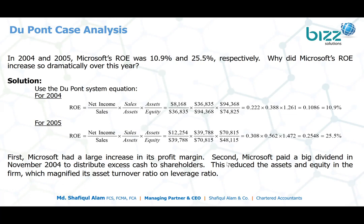Basically, Microsoft had a large increase in its profit margin. Additionally, Microsoft paid a very large dividend. The shareholders' equity consists of share capital, retained earnings, and other reserves. Because Microsoft paid a large dividend during 2004 and 2005, the cumulative retained earnings were significantly reduced.